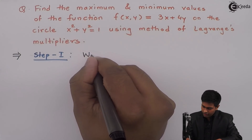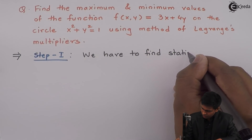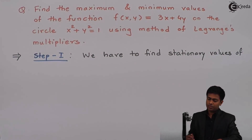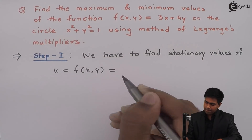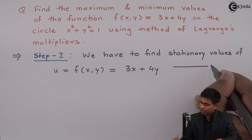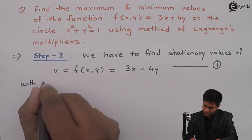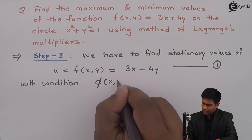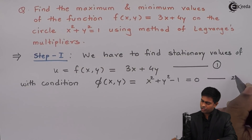Step number one: we have to find the stationary values of the function. This function is u = f(x,y) = 3x + 4y — equation number one — on the circle, with the condition φ(x,y) = x² + y² - 1 = 0, which is equation number two.